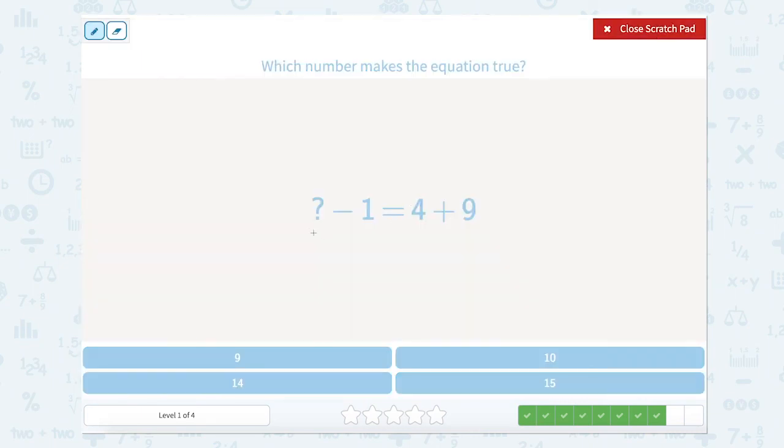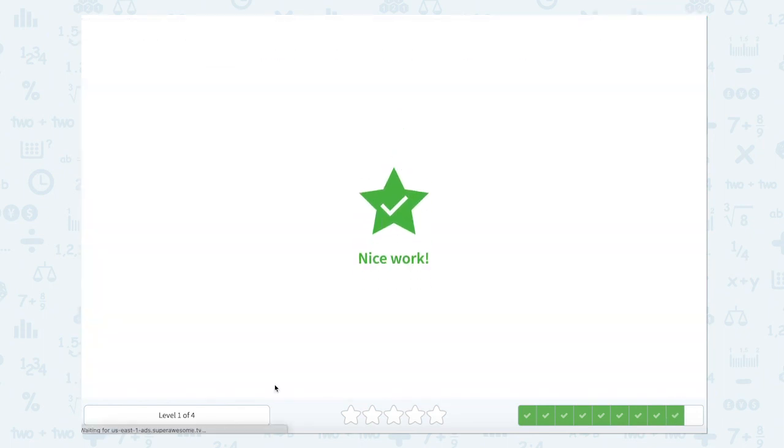Let's use our scratch pad again to look at the two parts of the equal sign, the two sides of the equal sign. We have something minus 1 and 4 plus 9. Well, 4 plus 9 is 13. So something take away 1 equals 13. So 1 more than 13, which is 14. Nice work.